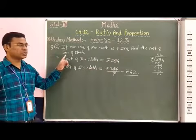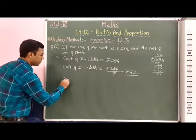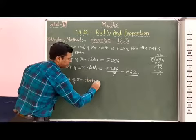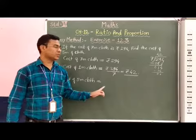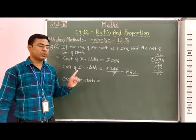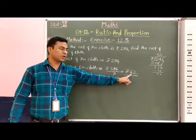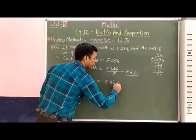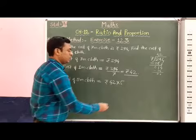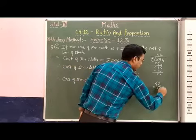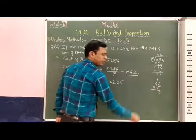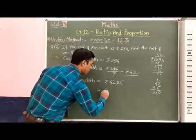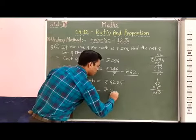Now we have to find out the cost of 5 meter cloth. Therefore, cost of 5 meter cloth is equal to 5 into cost of 1 meter cloth, which is equal to rupees 210. Therefore cost of 5 meter cloth is equal to rupees 210.